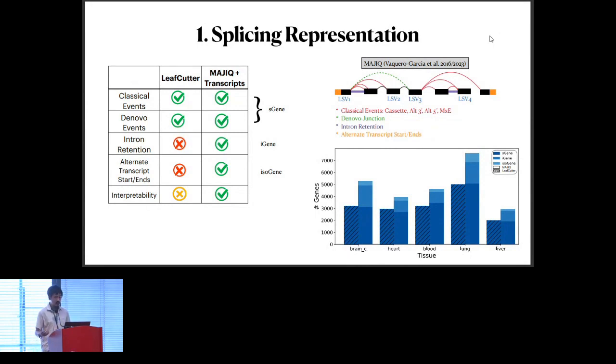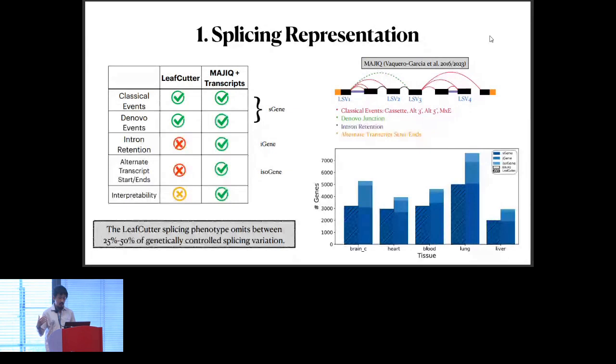We can augment the Majique approach by adding transcript quantifications to further allow us to capture additional splicing variation and potentially alternate transcript start ends. When we take GTEx pipeline and apply it to these five representative tissues, what we observe here is that leafcutter and Majique tend to find roughly the same number of S genes when it comes to classical and de novo events. But there is a very large increase in the number of SQTLs found when you look at intron retention events and also when you look at isogenes or isoform-associated variants. The message here is that when you use this inadequate splicing phenotype, it actually omits roughly a quarter to half of the genetically controlled splicing variation.